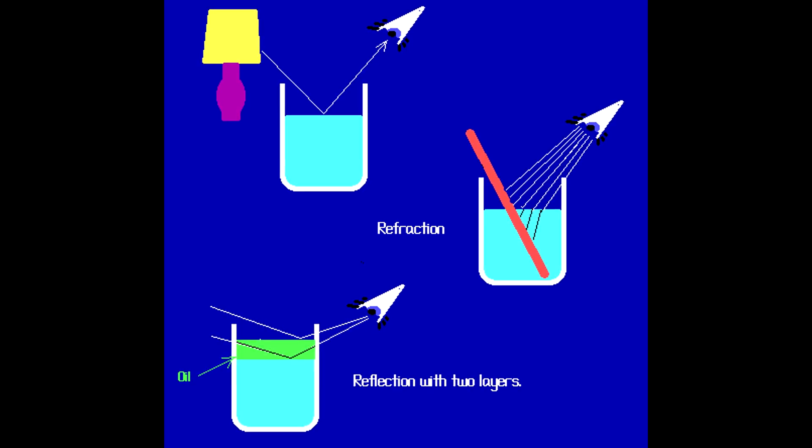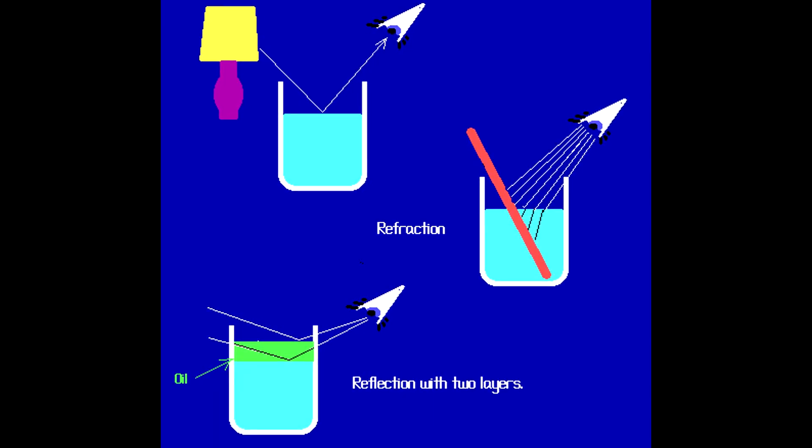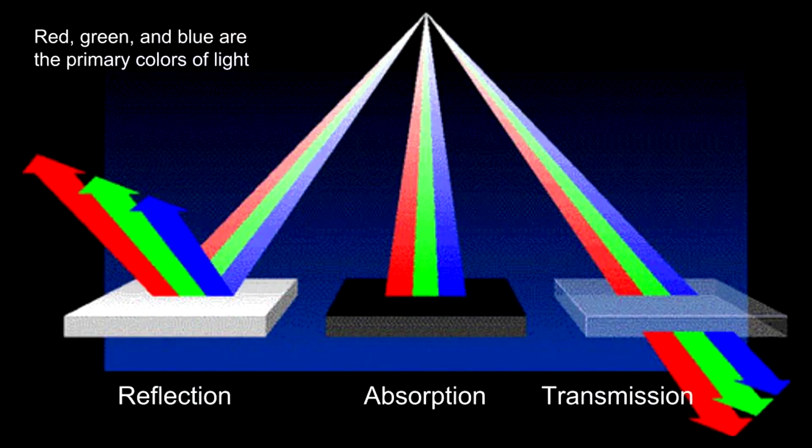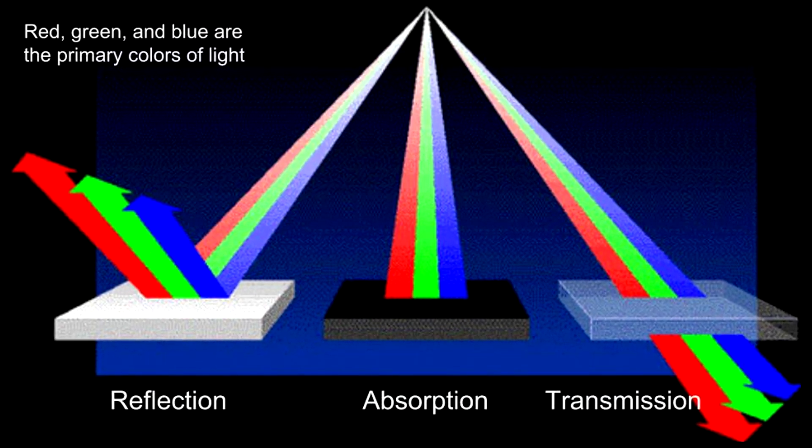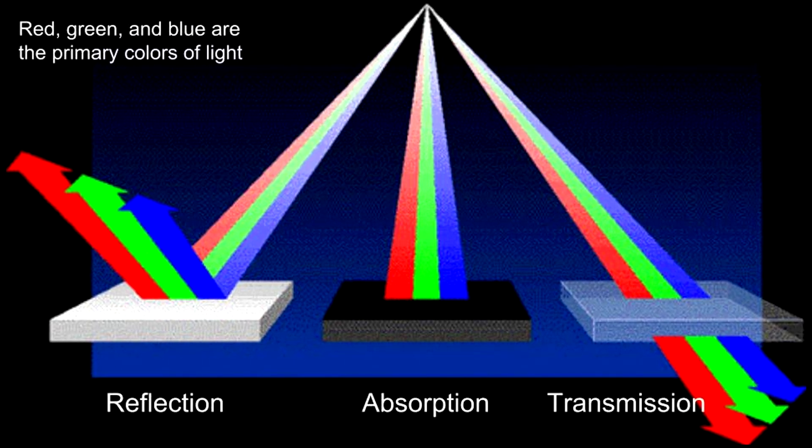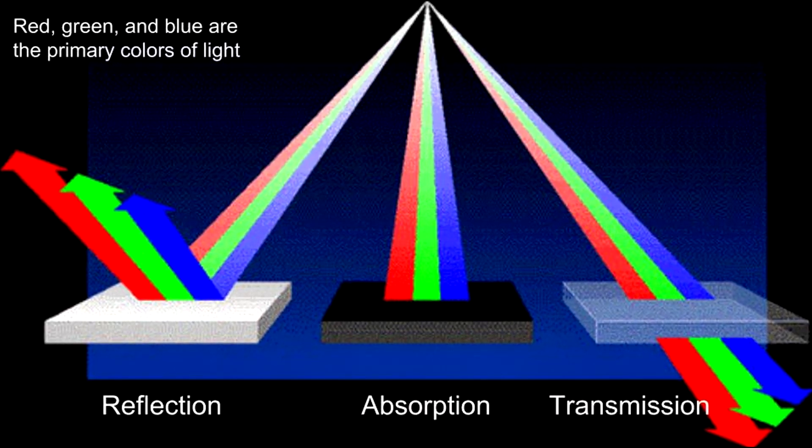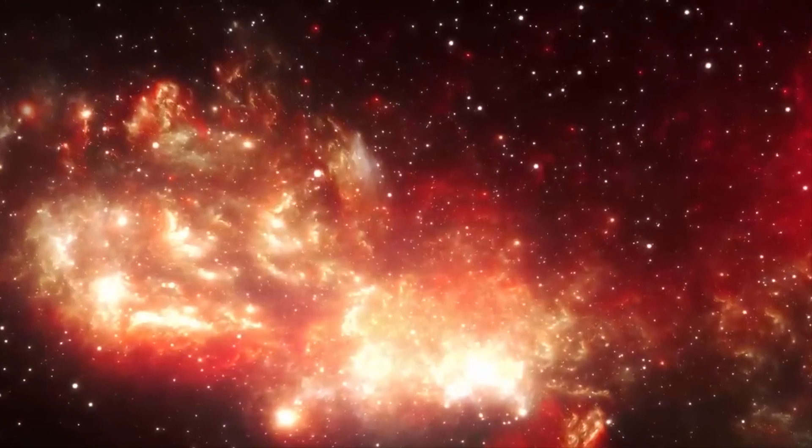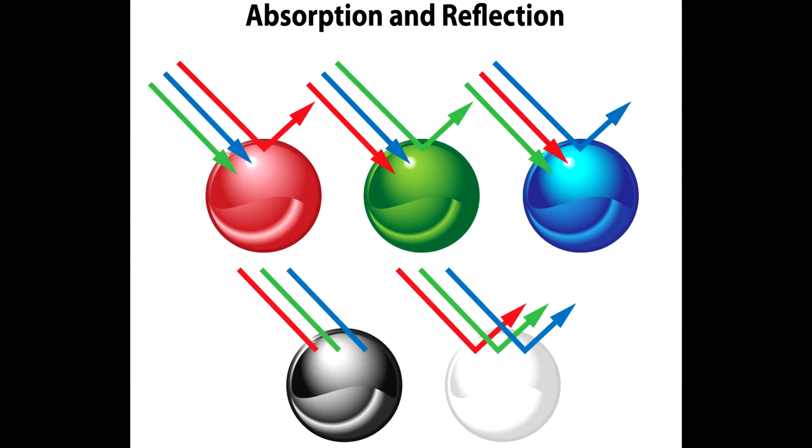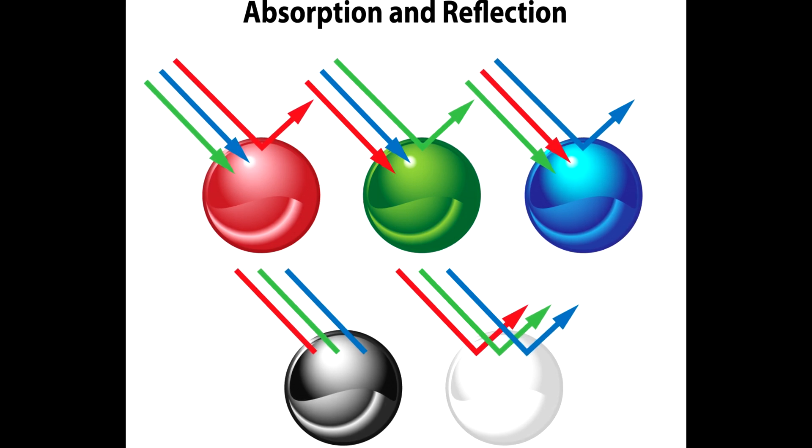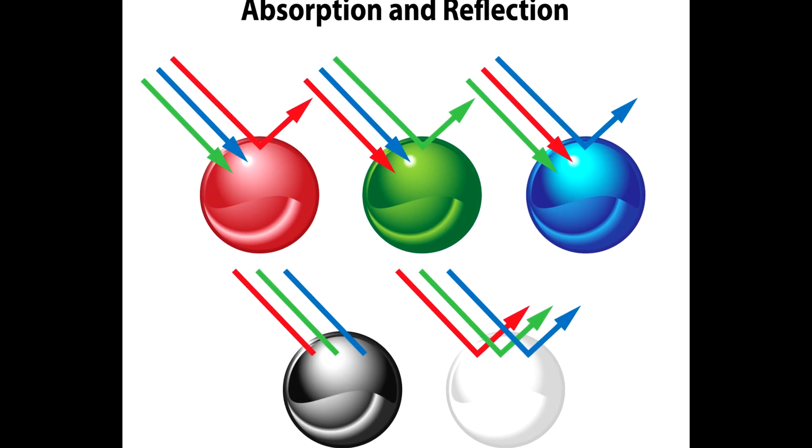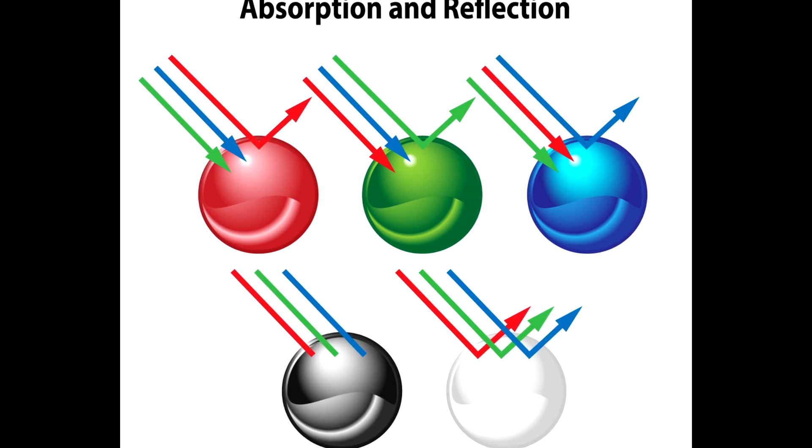Finally, absorption is the process by which light hitting the surface of an object is converted into another form of energy, such as heat. This occurs due to the interaction of light waves with material particles. For example, when an object is illuminated with blue light, the object may absorb all the blue waves and reflect red and green waves. As a result, the object will appear greenish.